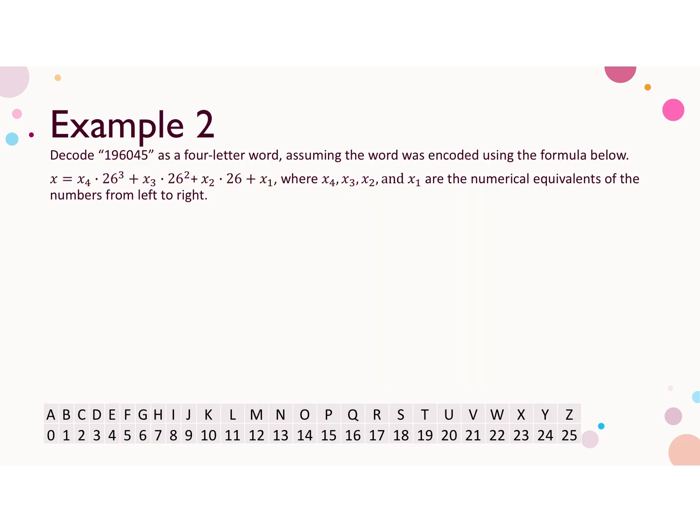Now in example 2, we want to decode 196,045 as a 4 letter word assuming we've used that same encoding formula from the previous example. So we're going to calculate the value of X4 first. So we take 196,045, divide by 26 cubed, and it goes in 11 times, so X4 is 11.